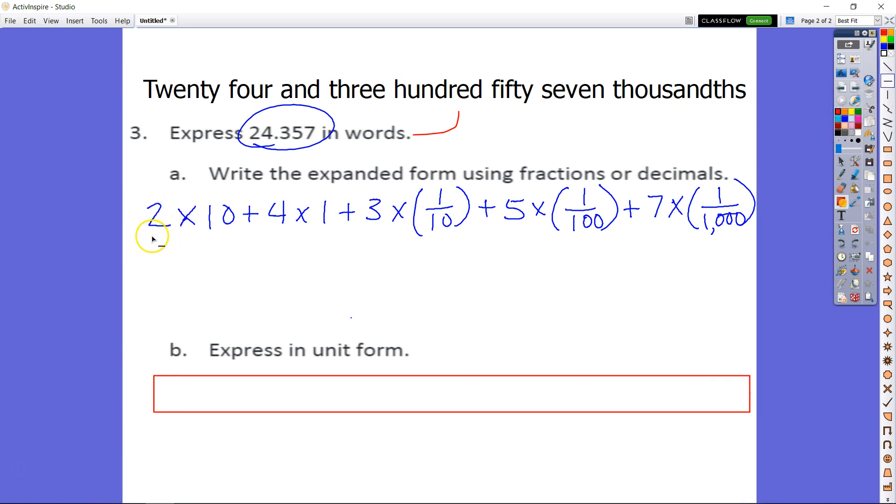So we have my tens place, my ones place, my tenths place, hundredths place, and my thousandths place. You have the digit that appeared in each one of those, and you have the actual place value unit itself.